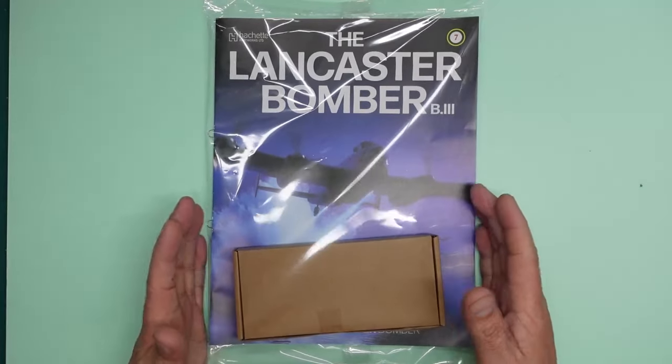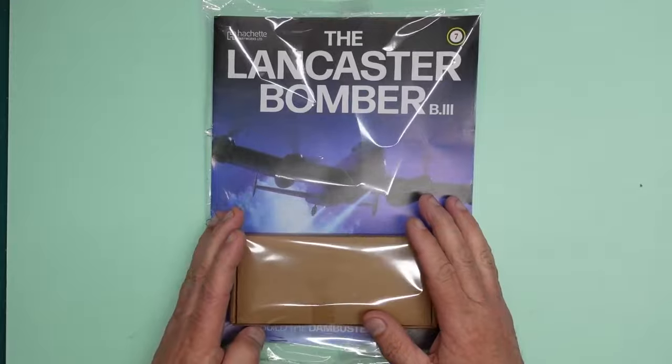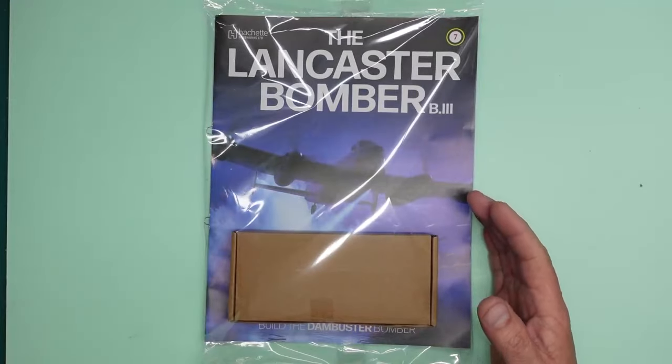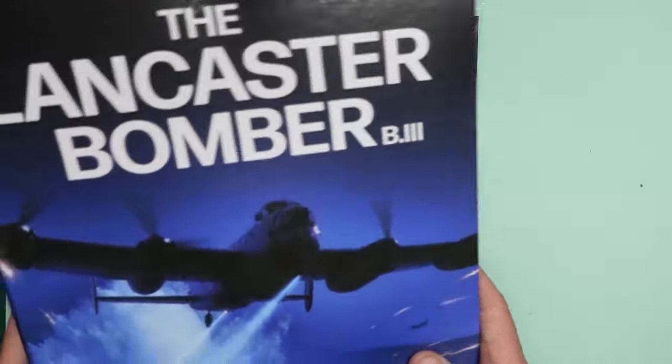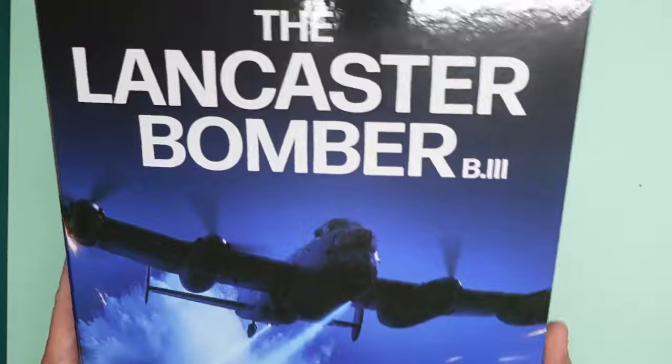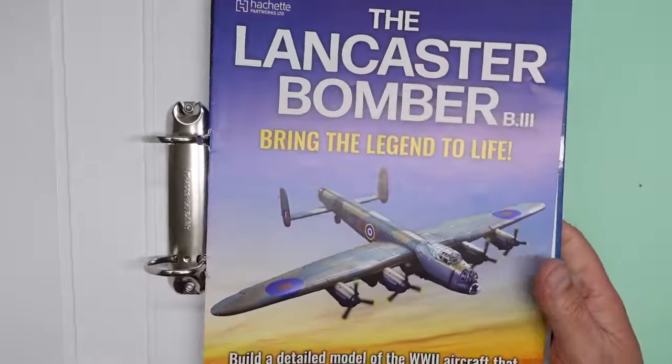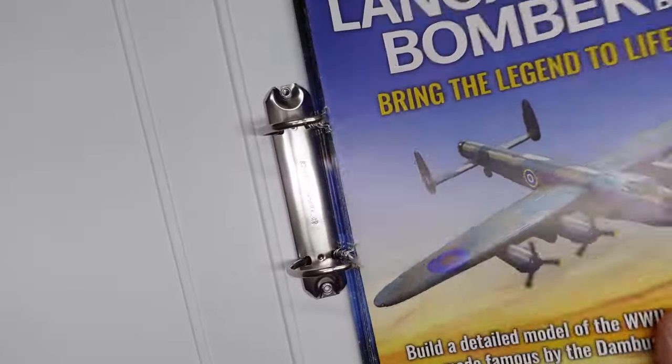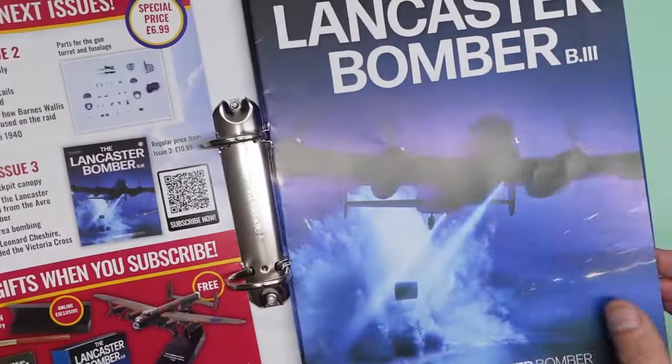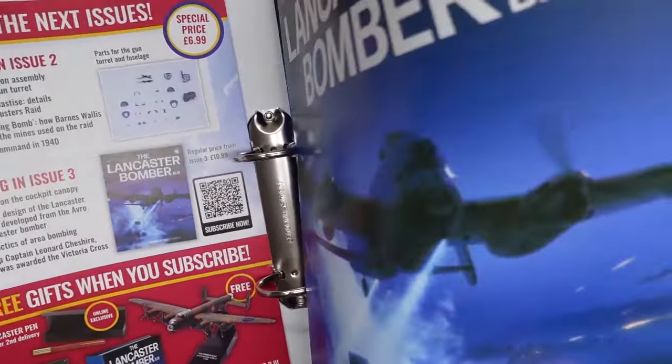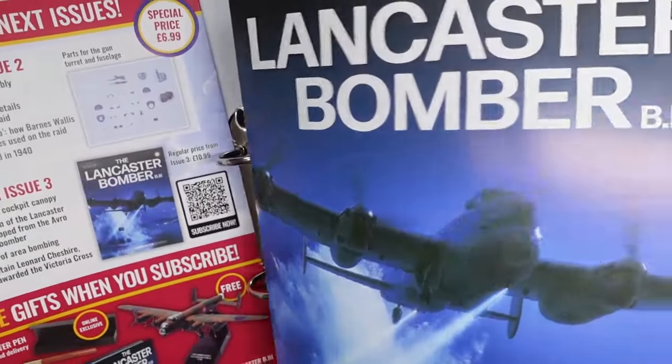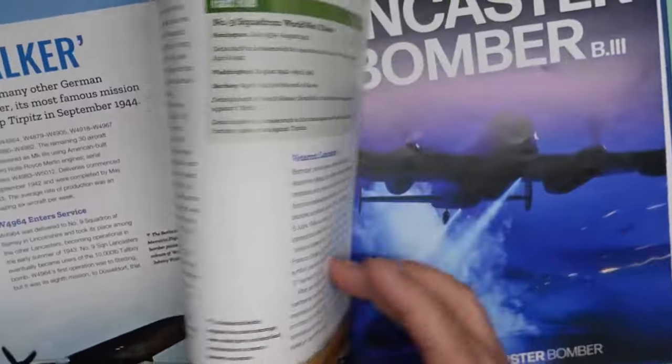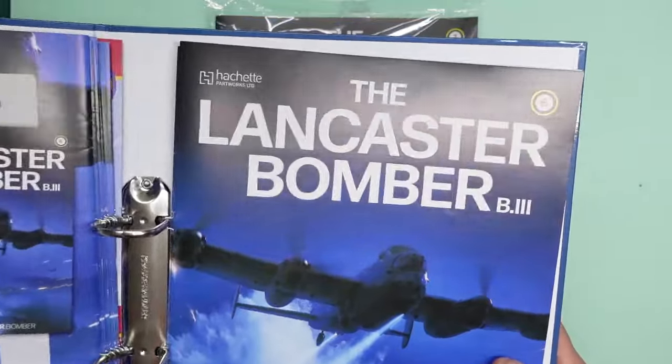This is pack 7, so this is my third delivery now I've had from Hachette. In that delivery, the little bonus you get is a binder. We've got a lovely ring binder here for putting all our magazines in. You'll notice all the magazines have these wire loops on them so they can go in there. Really, really nice to have that.